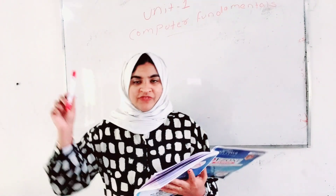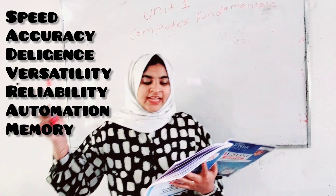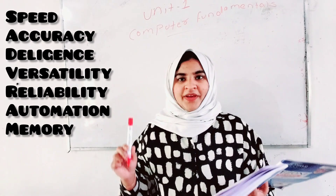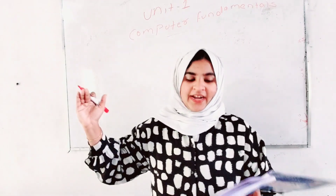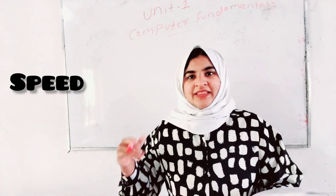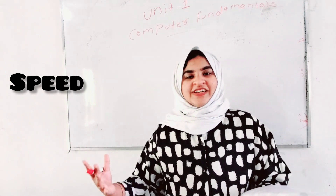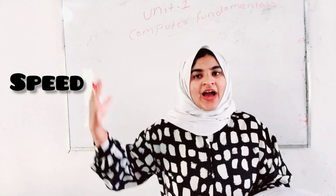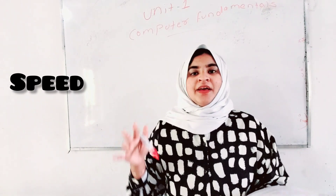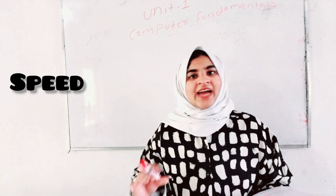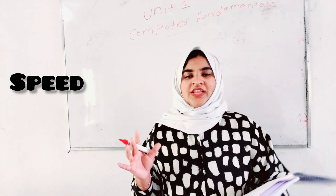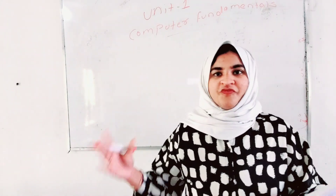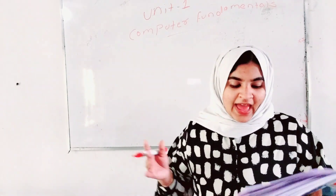Speed is the first characteristic of a computer. What is the result of speed in a computer? Speed and accuracy together are the first characteristics. The next one is accuracy.